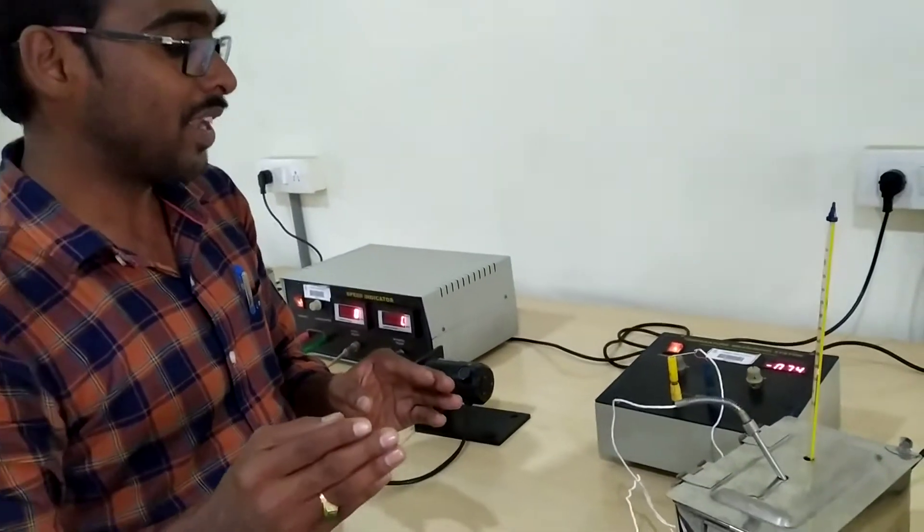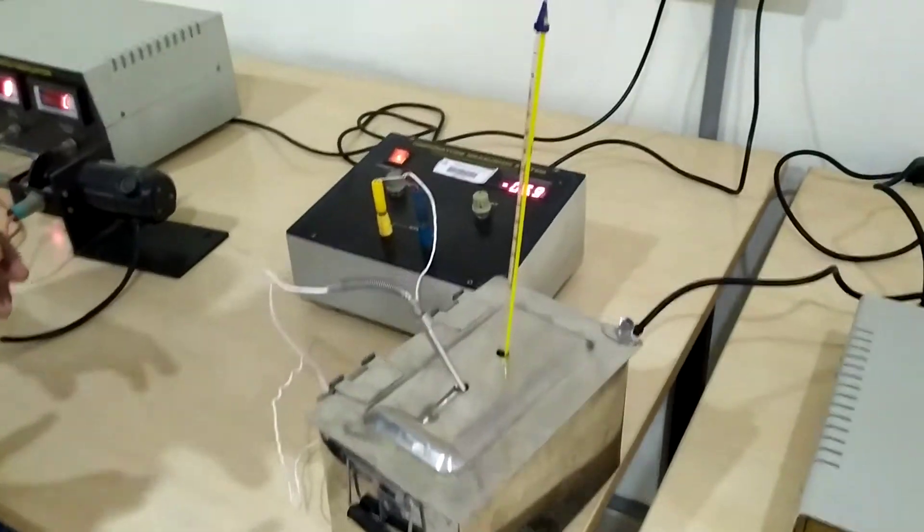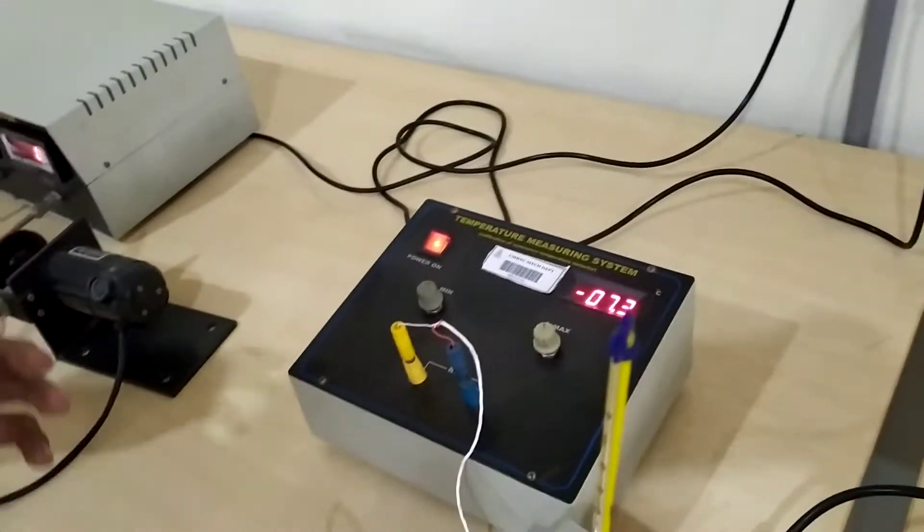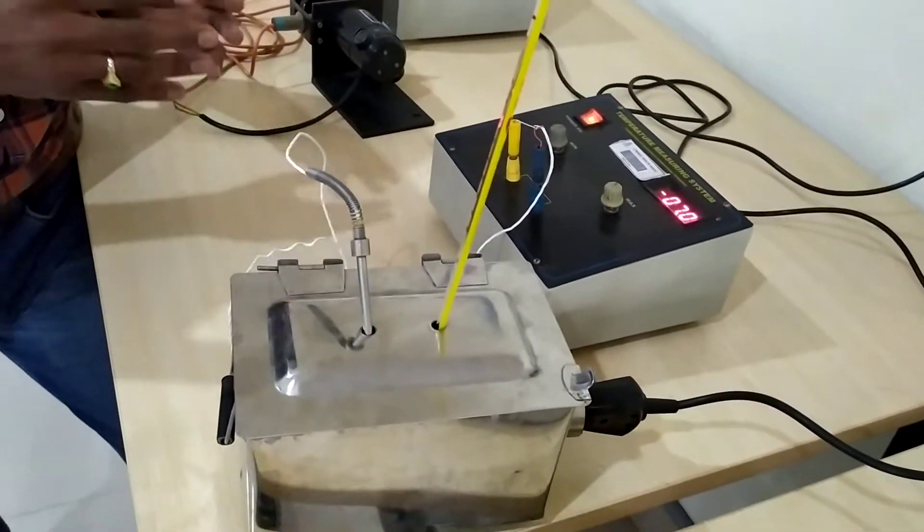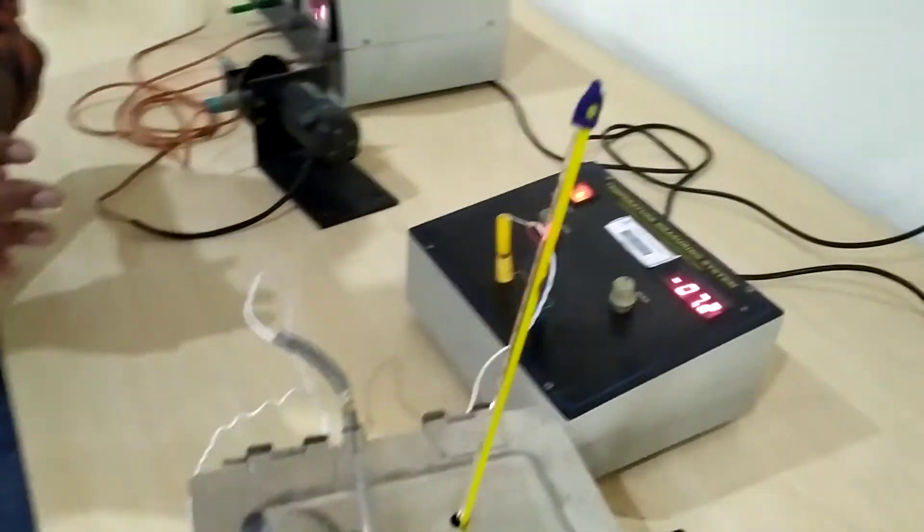In the earlier experiment we discussed how to calibrate a thermistor. Here we are going to describe how to calibrate an RTD, that is resistance temperature detector.